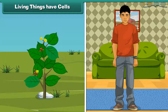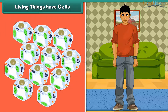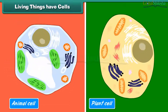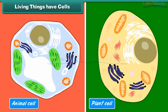Living things have cells. Each living being has a distinct individuality — it cannot be broken into two or more independent parts. The body of a living being is made of one or more cells. Cells are considered to be the structural and functional unit of life.